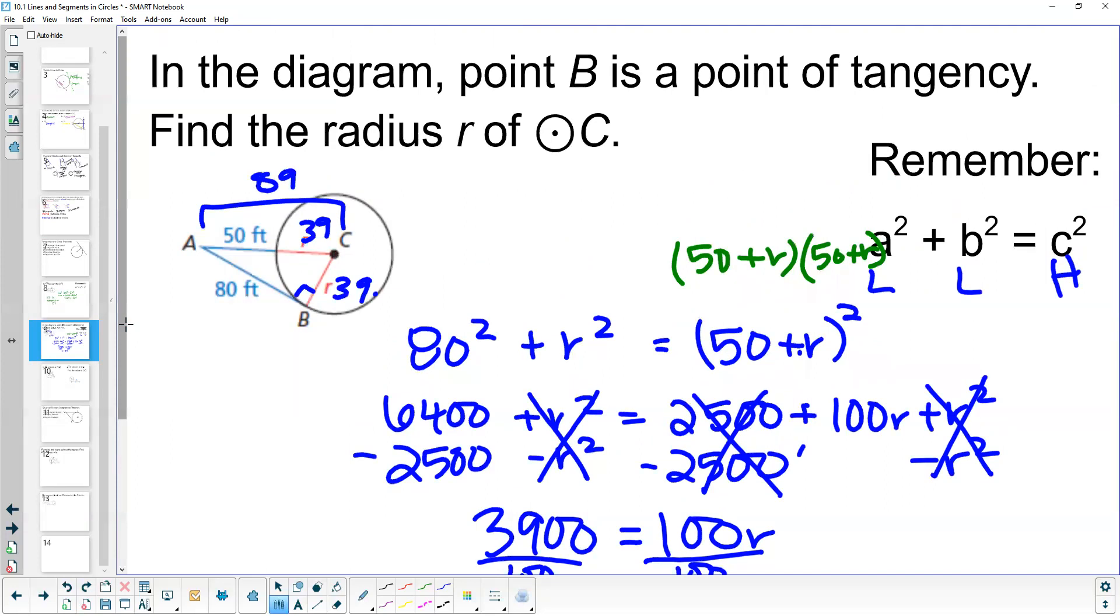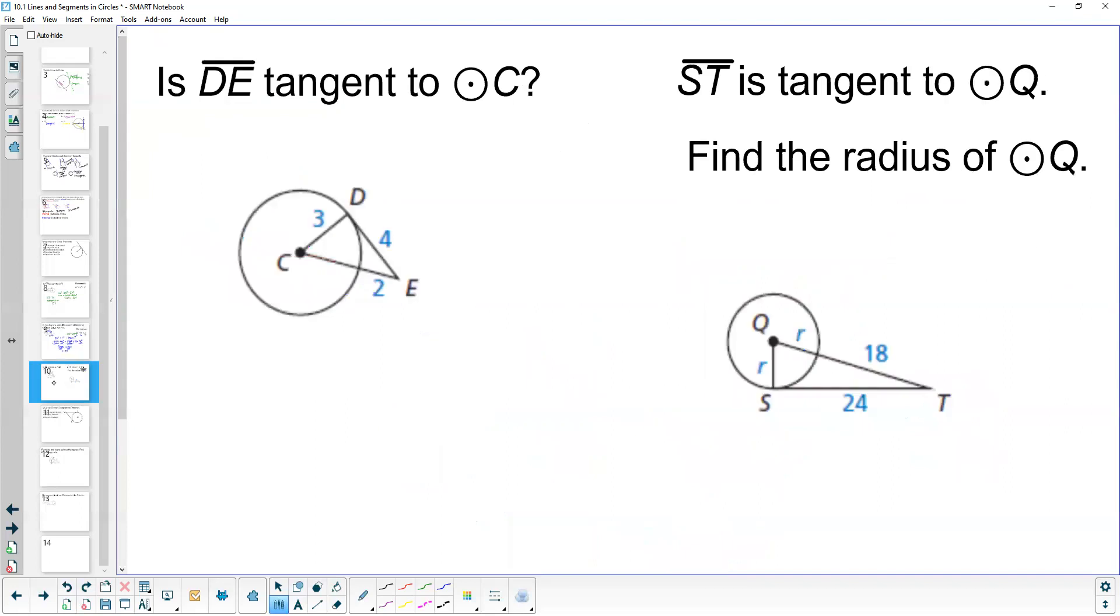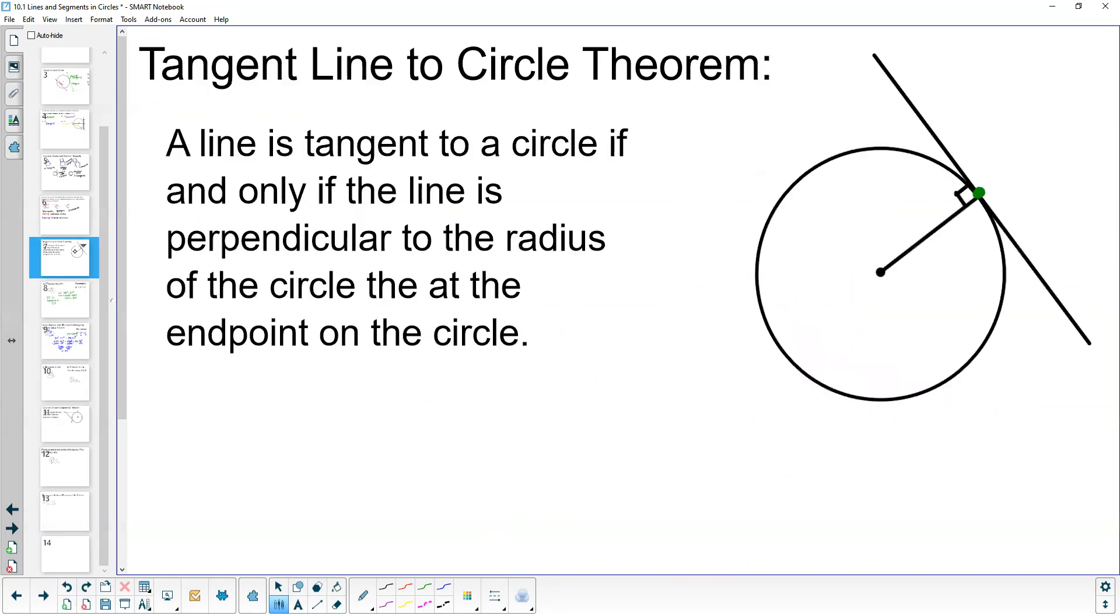That's how this works. The key thing in deciding whether a line is tangent is determining whether it makes a right triangle between the tangent, the radius of the circle, and the line from the center to a point on the tangent line. If those three lines make a right triangle, we can determine whether this is actually a tangent line. That is how we use the tangent line to circle theorem.